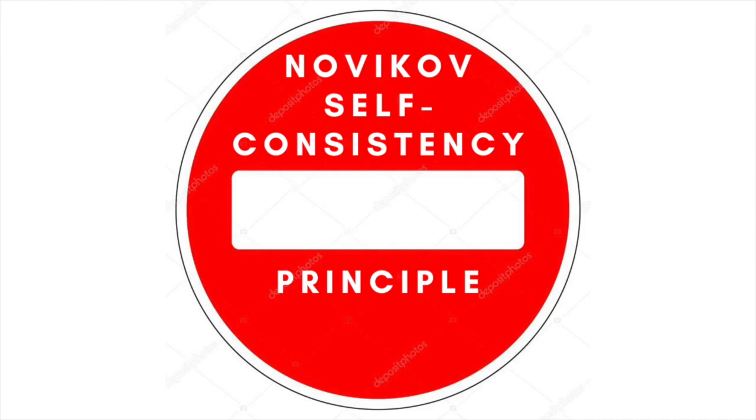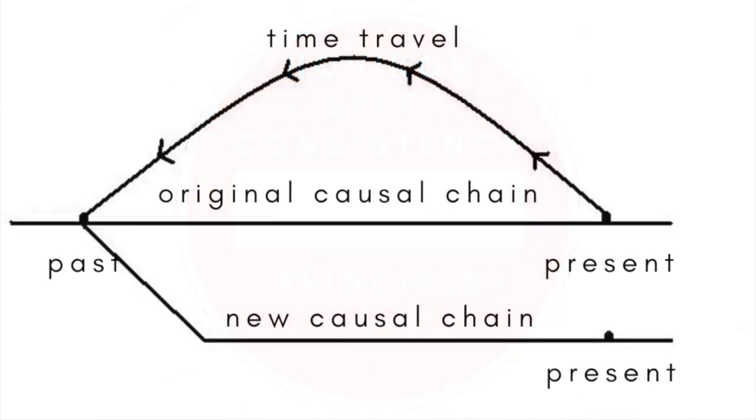Another variant on the fixed timeline concept is that any event that appears to have caused a paradox has in fact created a new timeline. The old timeline remains unaltered, and the time traveler becomes part of a new temporal branch line. One difficulty with this arrangement is that it might violate the principle of conservation of mass-energy, unless the mechanics of time travel demand that mass-energy be exchanged in precise balance between past and future at the moment of travel.